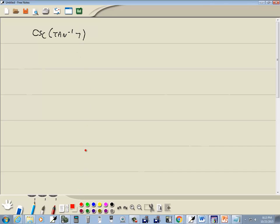Okay, remember our first step is we take what's inside our parentheses and set it equal to a variable. So we got P is equal to inverse tangent of 7.